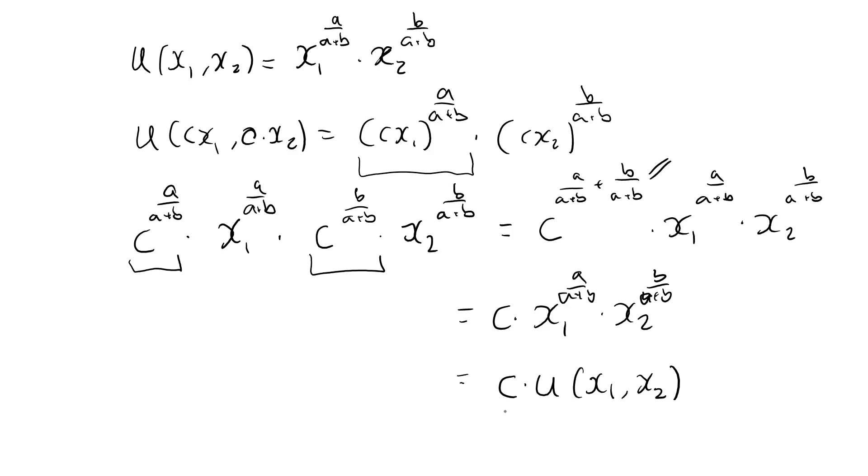This proves that the utility function is homogeneous of degree one and that all Cobb-Douglas preferences are homothetic. If, for example, you double your consumption of both goods with a normalized Cobb-Douglas utility function, that will precisely double the utility.